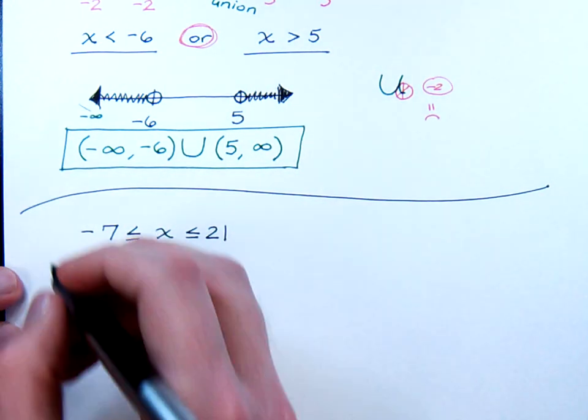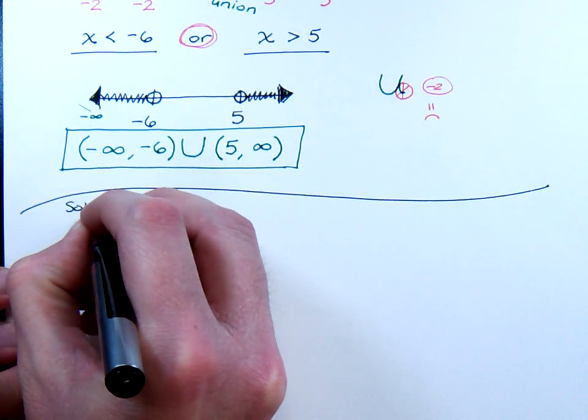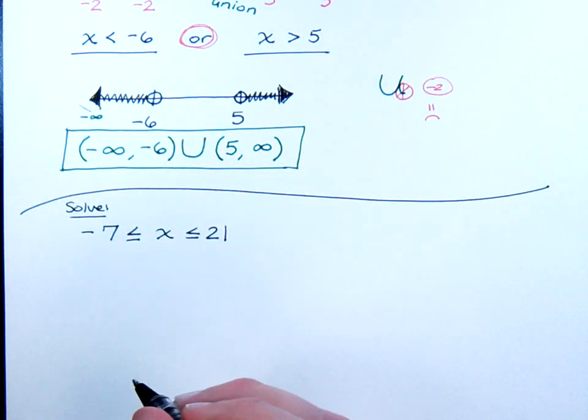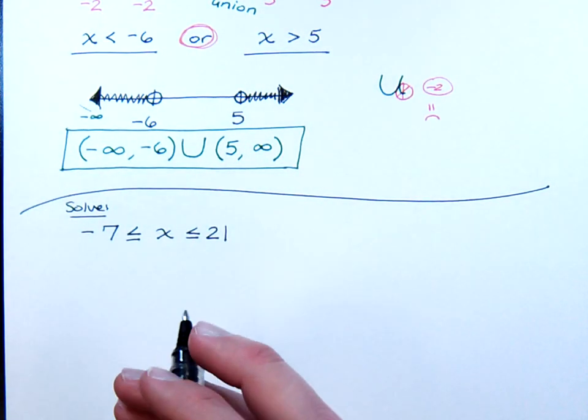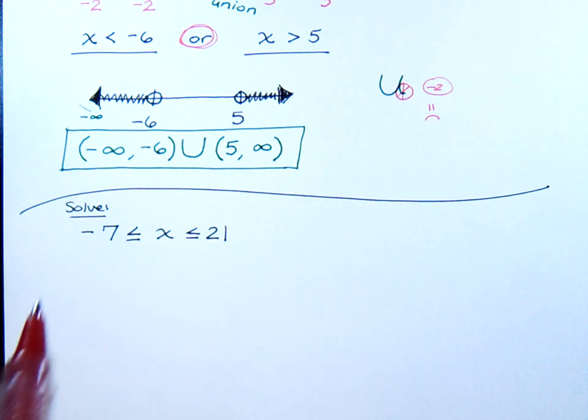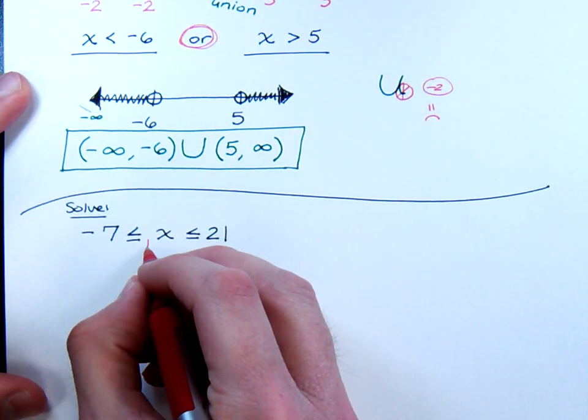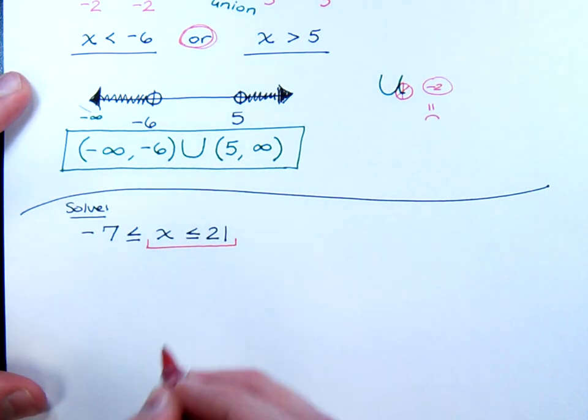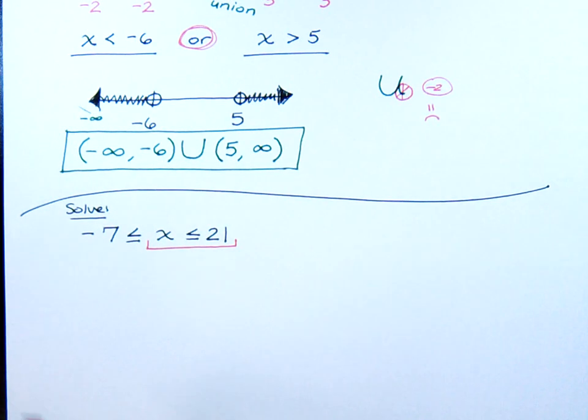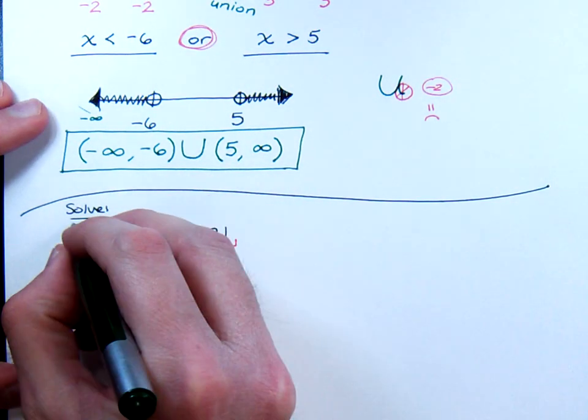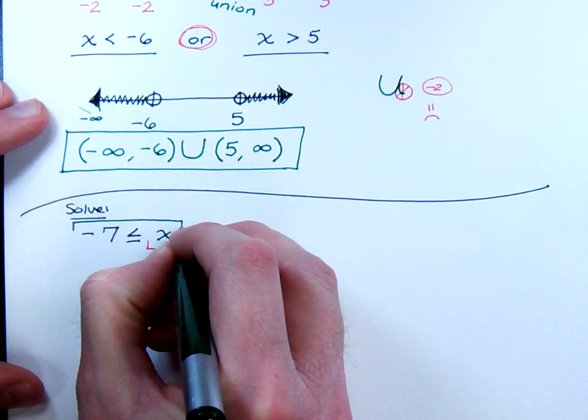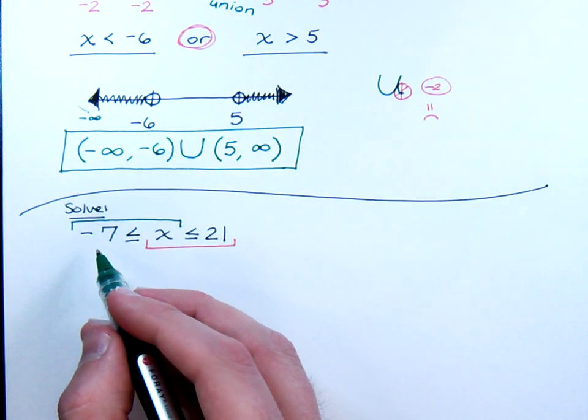If I have this compound inequality here, we need to understand that it means two inequalities smashed together. Basically, what we have is this, we have this inequality, x is less than or equal to 21. It also means that we have this inequality. The negative seven is less than or equal to x.